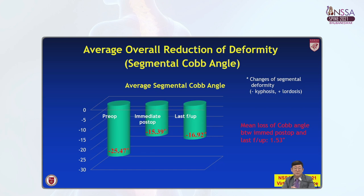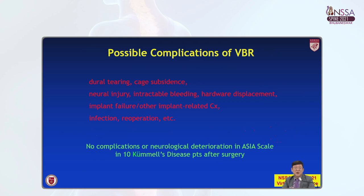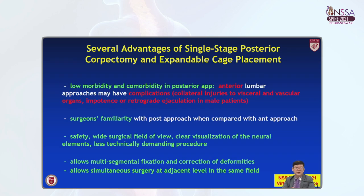Regarding deformity correction, it was reduced from preoperative minus 25 degrees to immediate post-op minus 15 degrees, and the mean loss of curve angle was very minimal between immediate post-op and last follow-up. Possible complications in vertebral body reconstruction with this method include dural tearing, cage subsidence, and neural injuries, but in my series of over 42 vertebral body reconstructions, I found no complications or neurologic deterioration in the 10 Kummel disease patients. Advantages include low morbidity and comorbidity in the posterior approach compared with anterior approaches, which carry risks of collateral injury to visceral or vascular organs.